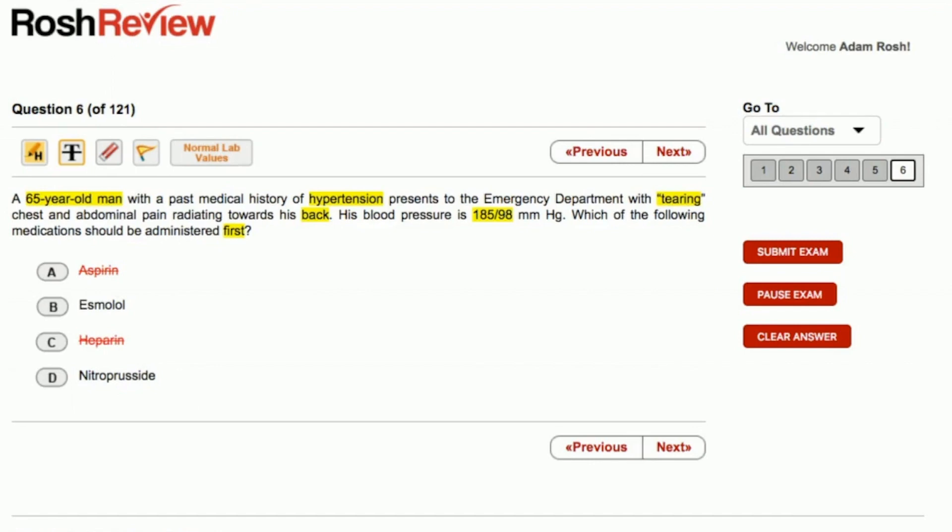And we're left with two medications here that are both vasoactive. We have esmolol and nitroprusside. So this is where the key, looking at the question again in the lead-in, which medication should be administered first?